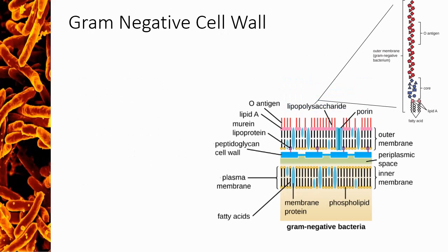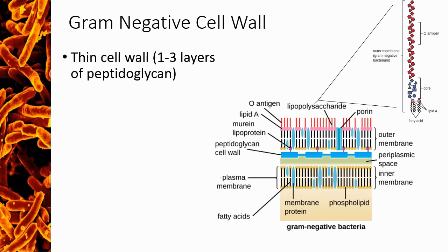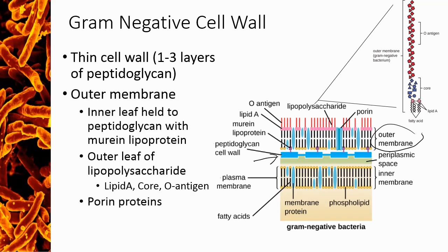In contrast, in gram-negative cells the peptidoglycan network is very thin, with only one to three layers surrounding the plasma membrane, indicated here with the blue line. Instead of a thick layer of peptidoglycan, gram-negative cells have a second lipid layer called the outer membrane. This outer membrane is composed slightly differently than the plasma membrane — the inner leaf is held close to the peptidoglycan layer through a protein called murein lipoprotein, which can bind both the peptidoglycan and embed in the lipid membrane.